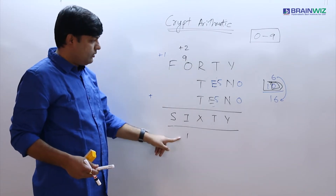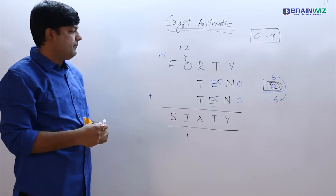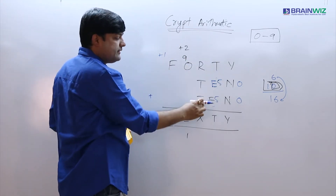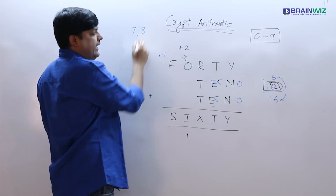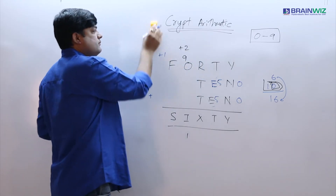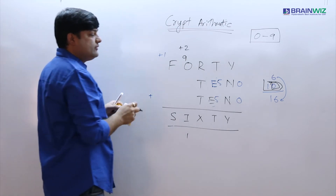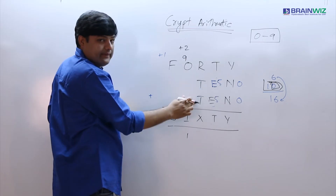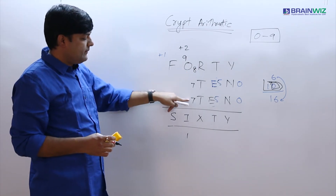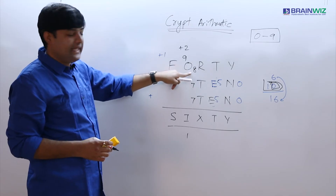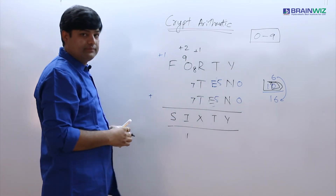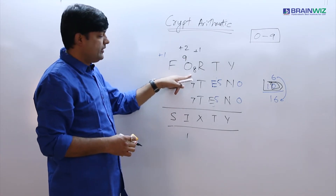In order to get a carry of 2 from the R plus T plus T column, the numbers should be maximum. One possibility is 8, 7, 7 — that is R equals 8, T equals 7. With the incoming carry of 1 from the E column: 7 plus 7 plus 8 plus 1 equals 23, giving digit 3 and carry of 2.